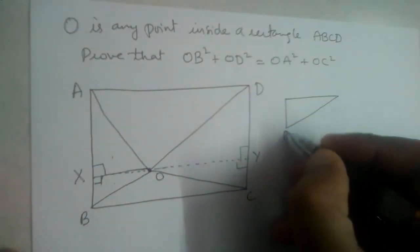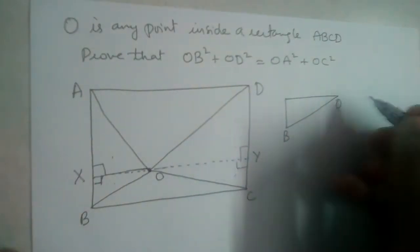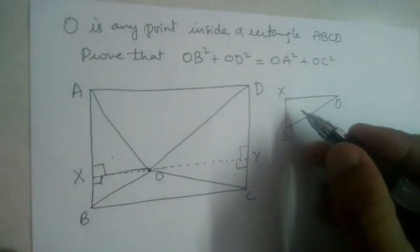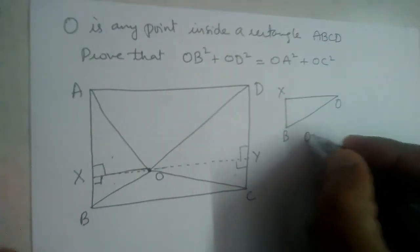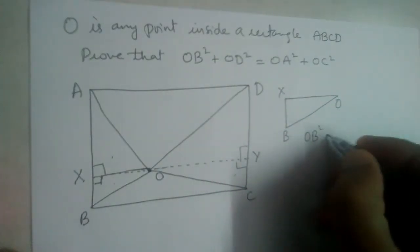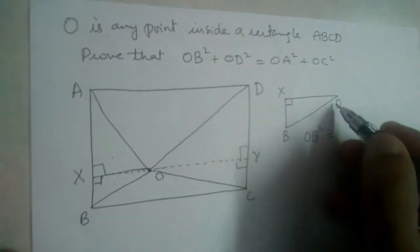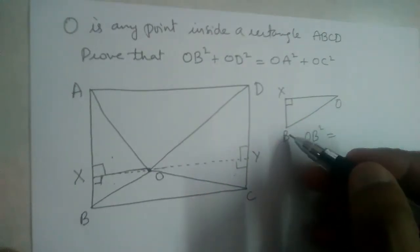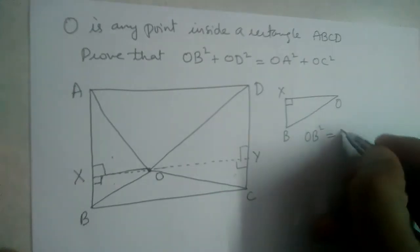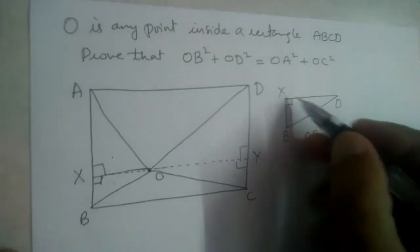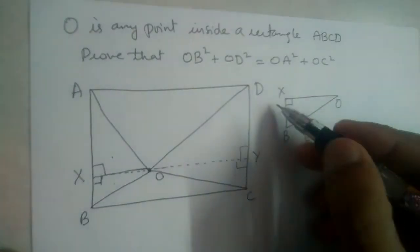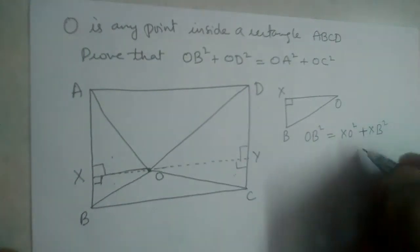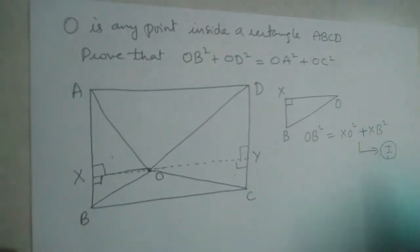Let us first take triangle OBX. Apply Pythagorean theorem here — this angle is 90 degrees, so OB is the hypotenuse. OB² = XO² + XB². Let this be equation one.